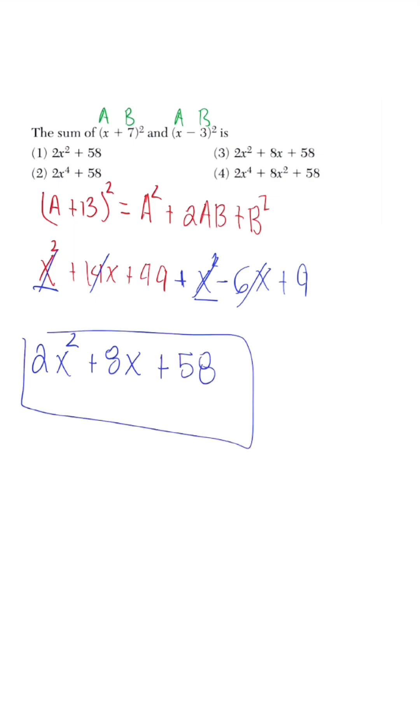And positive 49 and positive nine is going to give me a positive 58. So when I look at my answer, I'm going to have a trinomial, meaning answer choice one and two are gone. And only answer choice three has the correct expression with the correct exponent powers.